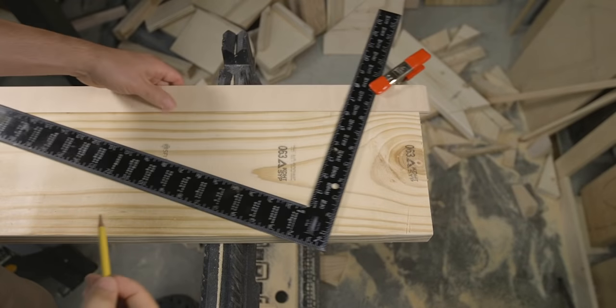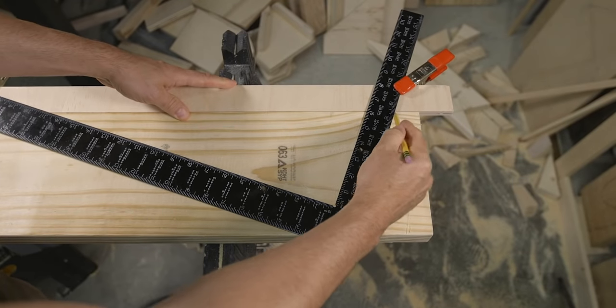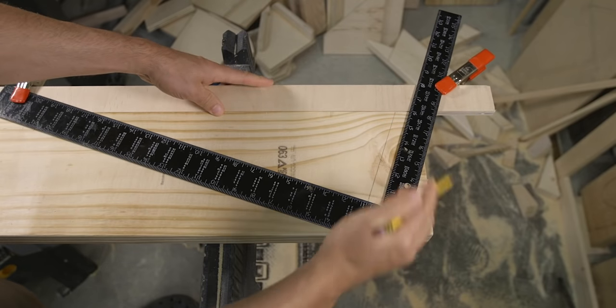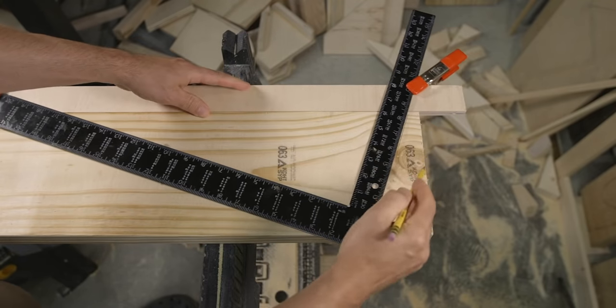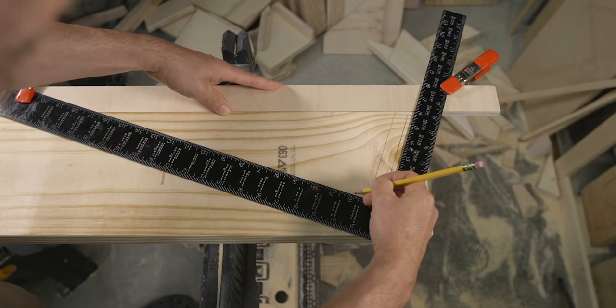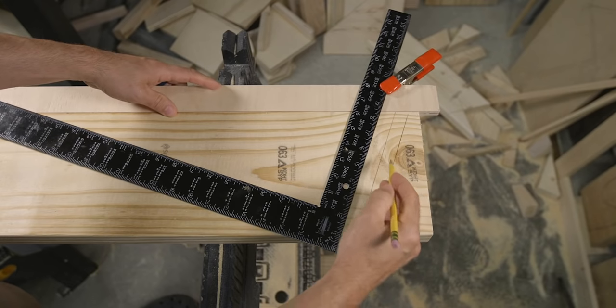All right, with the framing square set to six and 17, mark out the top cut by drawing a line, and this time adding two more lines three quarters of an inch to the right and to the left. We will use these additional lines as guides to make our double bevel cut at the top of the rafter.